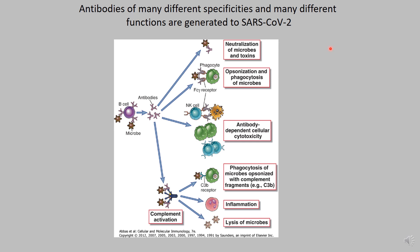There are other ways to eliminate a pathogen. You can opsonize or phagocytose the virus, and you can also use a mechanism known as ADCC, or antibody-dependent cellular cytotoxicity. Here, NK cells, through their receptors, bind virus-specific antibodies, which then recognize antigens presented on antigen-presenting cells. If a phagocyte captures the SARS virus and presents it on its surface, the antibody recognizes it and through its constant portion binds an NK cell, which then gets activated and kills the infected cell. Alternatively, via the complement pathway, you can phagocytose microbes, cause inflammation, or result in the lysis of microbes.